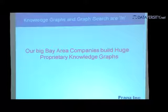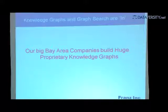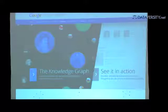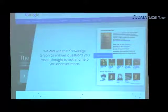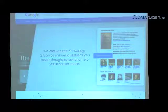Knowledge graphs and graph search are very much in style. All the big tech companies build huge proprietary knowledge graphs. Google is building the knowledge graph — if you search for Leonardo da Vinci, you get a page with a lot of information on the right-hand side. Basically, Google is building an encyclopedia of everything: every important person, place, organization, and product, with all the relationships between them. Their architecture looks very much like an RDF graph database.